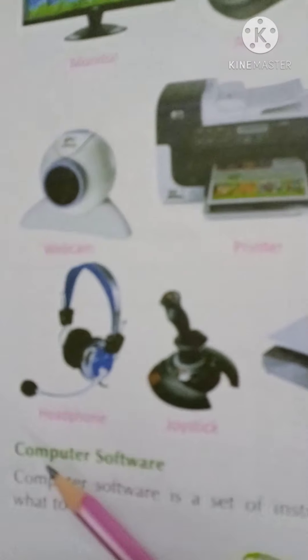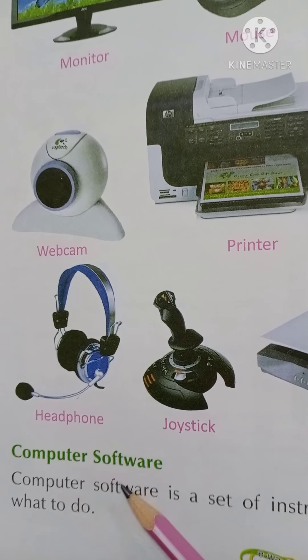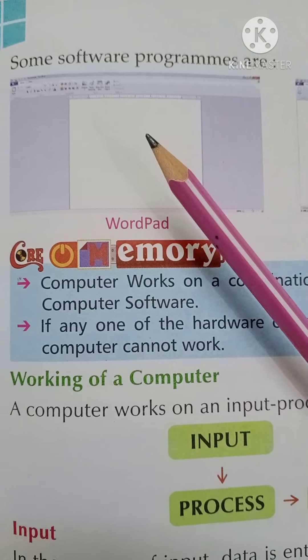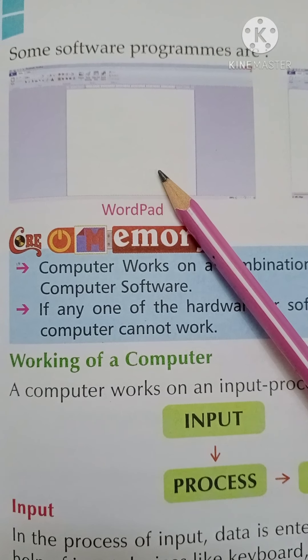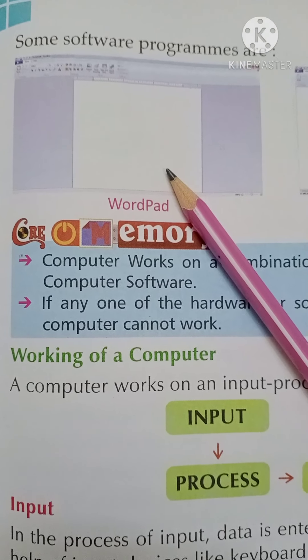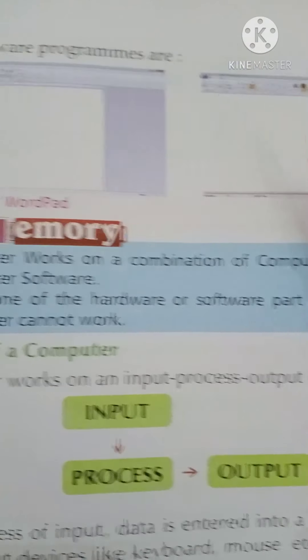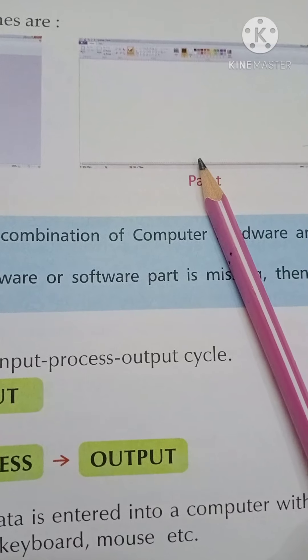Next is computer software. Software refers to those parts which we cannot touch — they are inside the screen. Examples include WordPad and Paint.